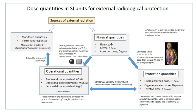In general, ionizing radiation is harmful and potentially lethal to living beings but can have health benefits in radiation therapy for the treatment of cancer and thyrotoxicosis. Most adverse health effects of radiation exposure may be grouped in two general categories: deterministic effects, due in large part to the killing and malfunction of cells following high doses, and stochastic effects — cancer and heritable effects involving either cancer development in exposed individuals owing to mutation of somatic cells, or heritable disease in their offspring owing to mutation of reproductive cells.